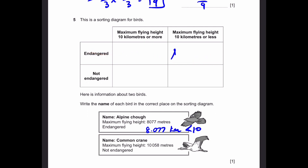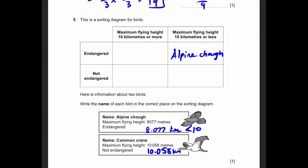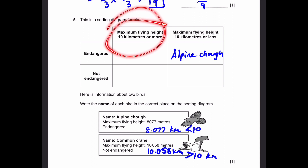So the Alpine Choe has to go here. Now for the common crane — its maximum flying height is 10,058 meters, and it's not endangered. So this maximum flying height is 10.058 kilometers, and in this case it's greater than 10 kilometers. So its maximum flying height is 10 kilometers or more, and it goes in this column.